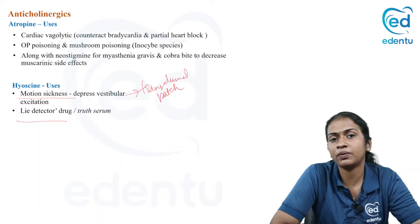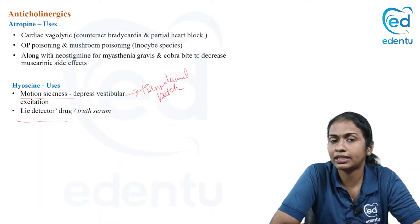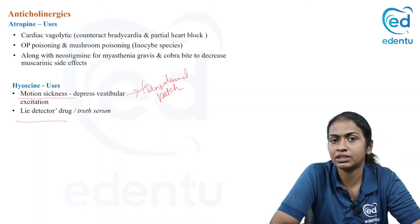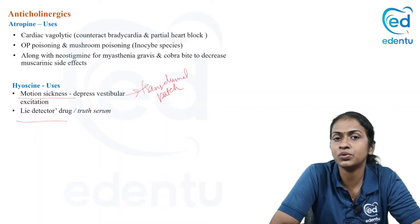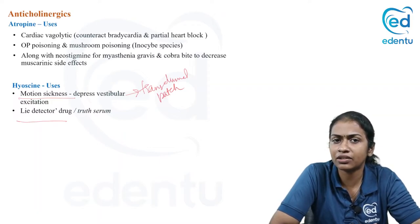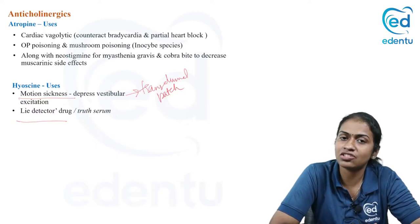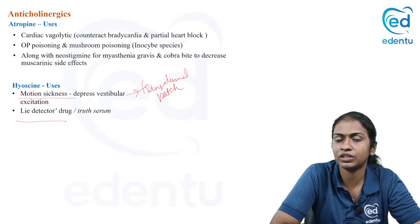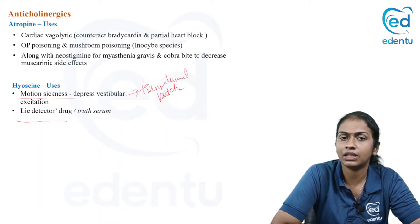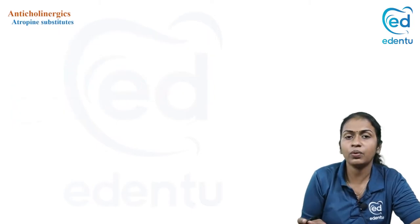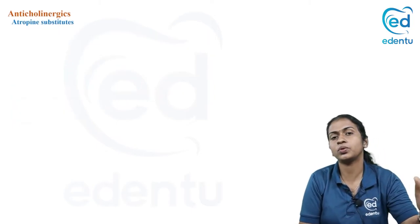The same principle applies to combining atropine with diphenoxylate. Diphenoxylate is an anti-motility drug and an opioid derivative with abuse potential. It is combined with atropine because atropine causes anticholinergic side effects that are discomforting to the patient, reducing the likelihood of abuse of this particular drug.